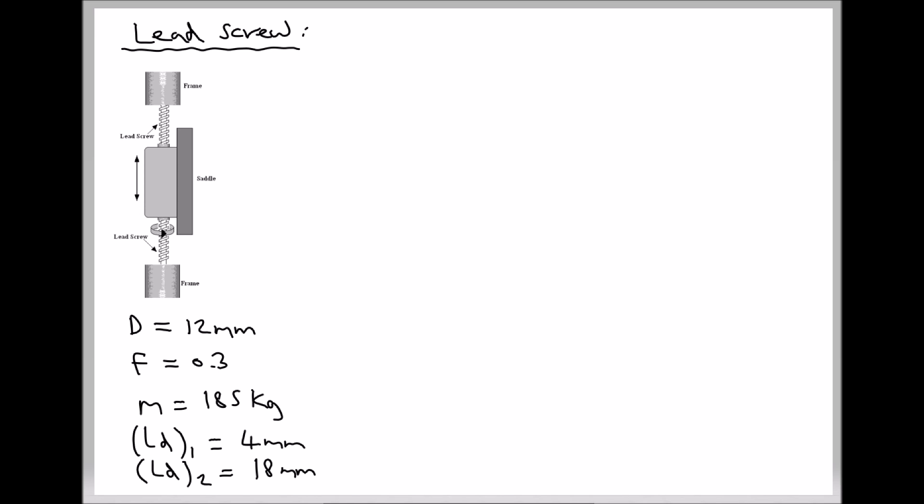In the bottom left hand corner I have some data. First of all I have the effective diameter of the lead screw itself, and also the coefficient of friction that would exist between the rotating components. I have the mass that we are lifting as 185 kg, and I have two different lead distances. The first lead distance we are going to work with is 4 mm, and then we are going to examine the effects on efficiency and the torque required to lift the mass when we increase the lead distance to 18 mm.